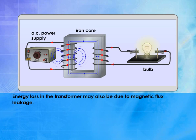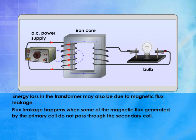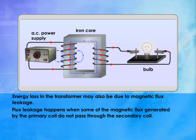Energy loss in the transformer may also be due to magnetic flux leakage. Flux leakage happens when some of the magnetic flux generated by the primary coil does not pass through the secondary coil.